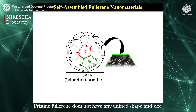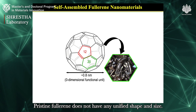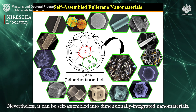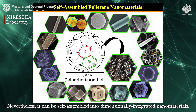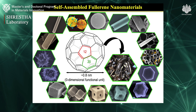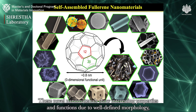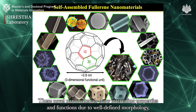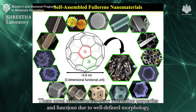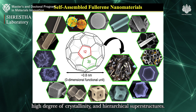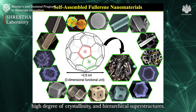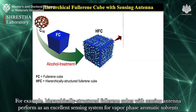Pristine fullerene does not have any unified shape and size. Nevertheless, it can be self-assembled into dimensionally integrated nanomaterials. These novel nanomaterials show interesting properties and functions due to well-defined morphology, high degree of crystallinity, and hierarchical superstructures.